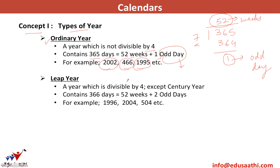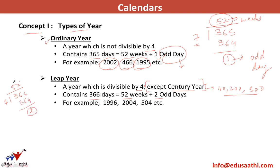A leap year is a year divisible by 4. A leap year has 366 days, which is 52 weeks plus 2 odd days. Divide 366 by 7: you get 52 with remainder 2, giving 2 odd days. Examples of leap years are 1996, 2004, and 504 — all divisible by 4.